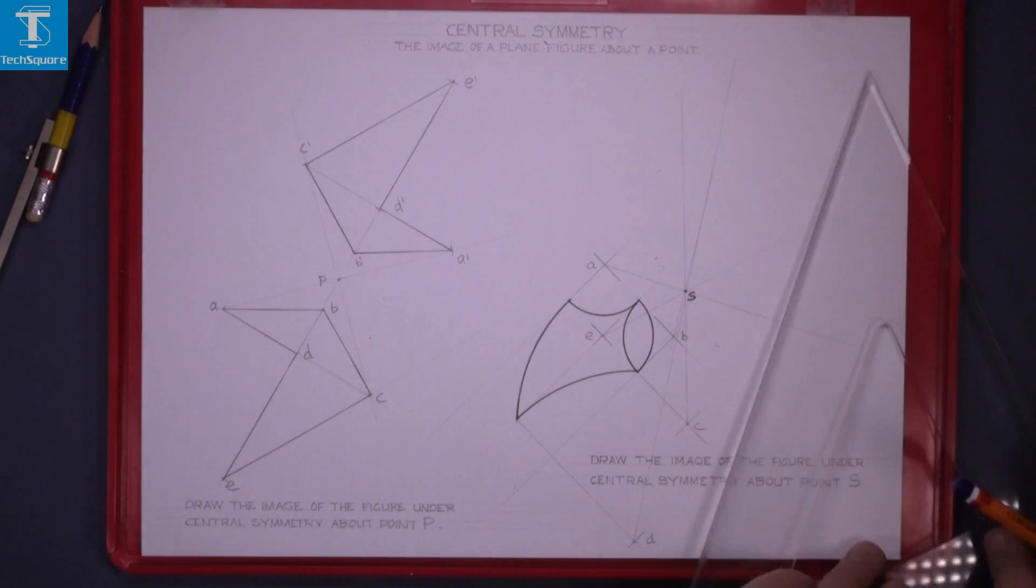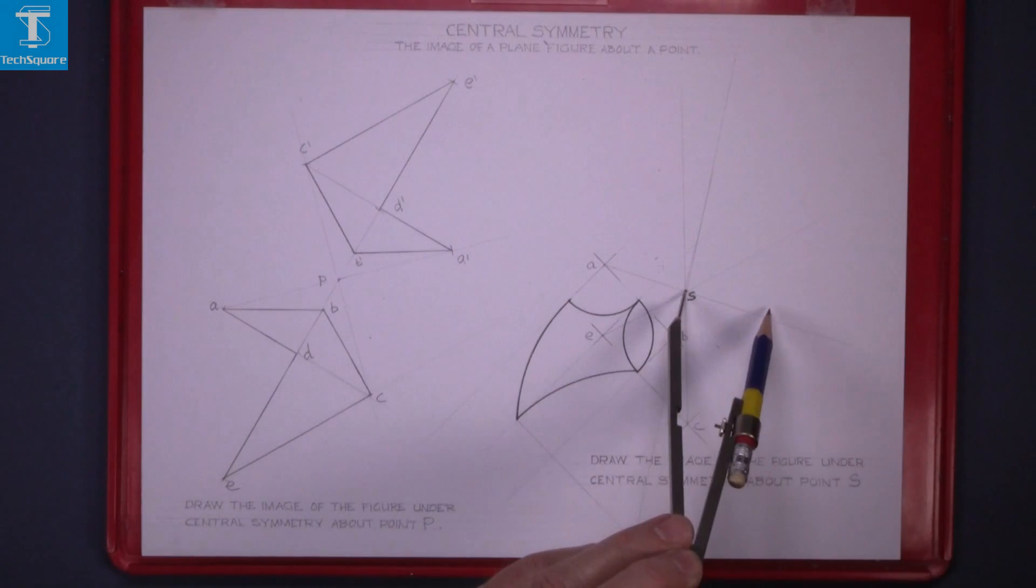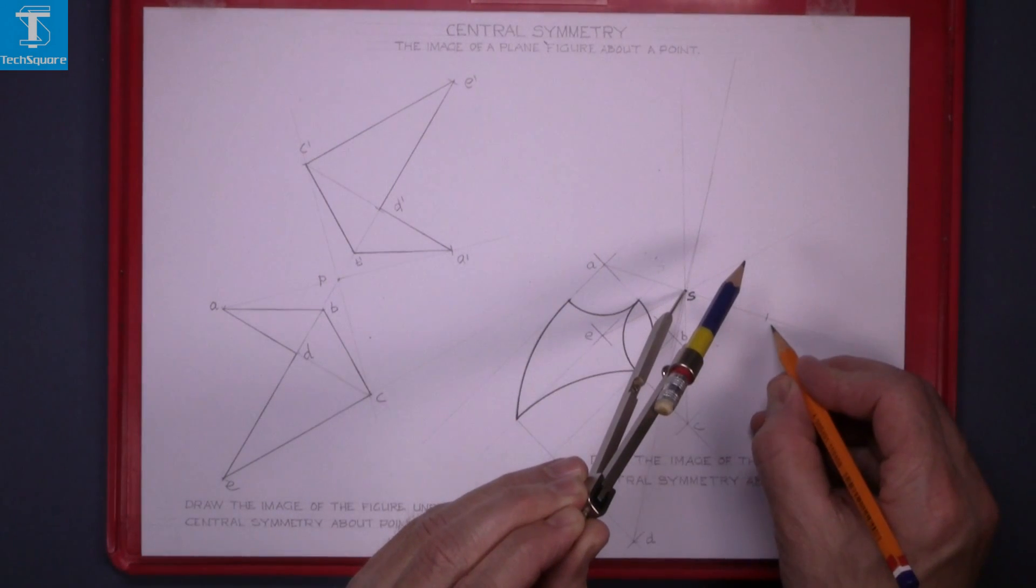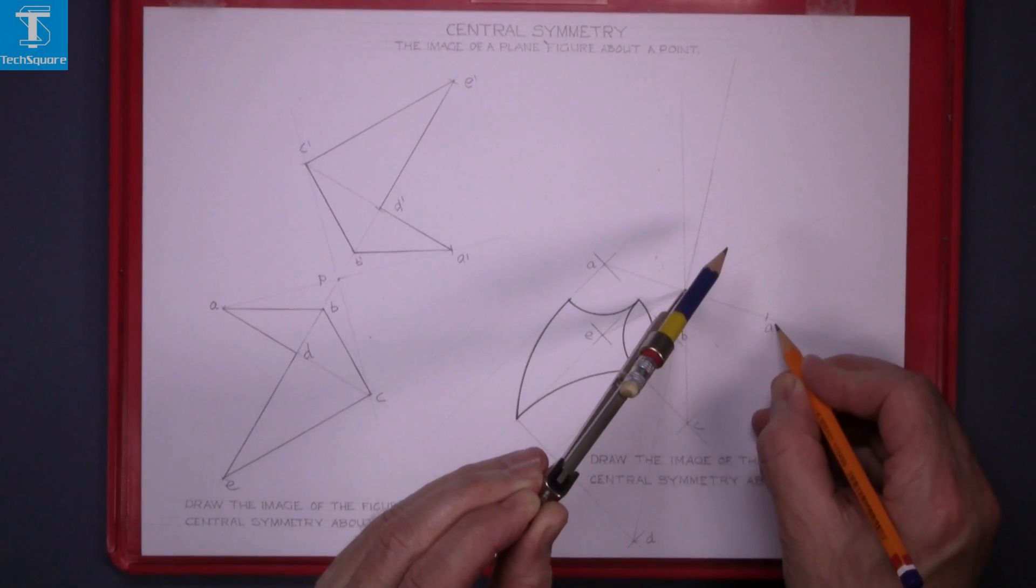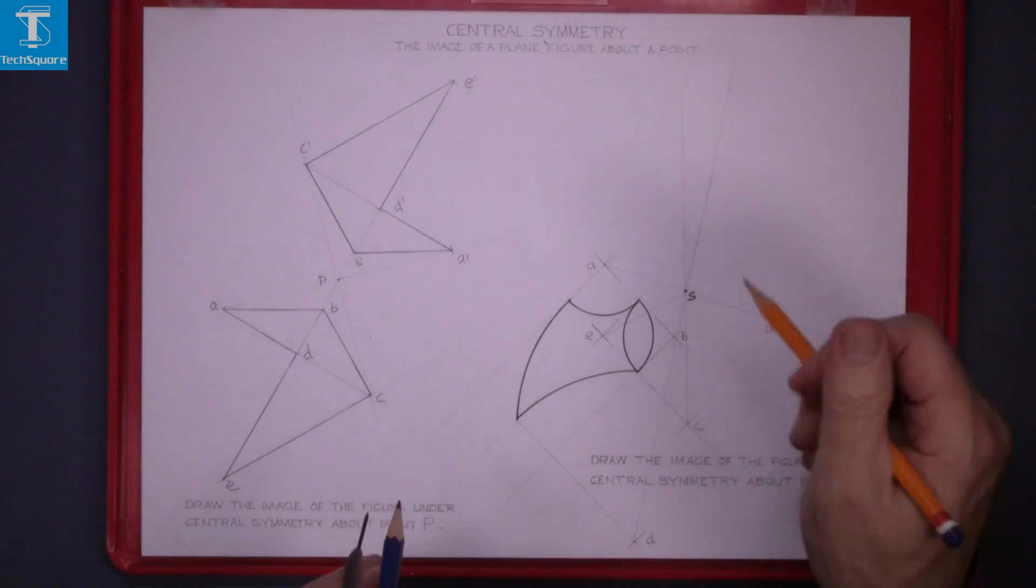And now with the compass set from A, mark it out to find the new point A, which we call A1. Next is B, and that's B1.